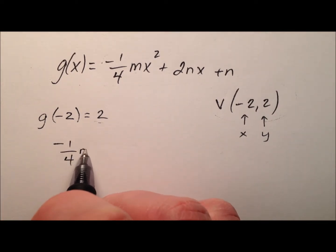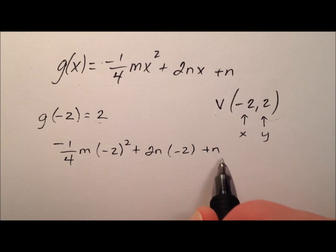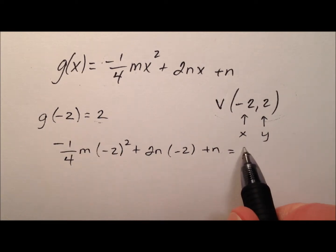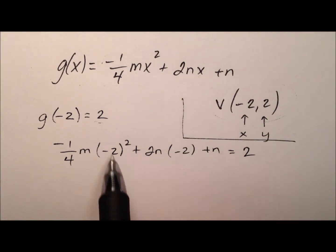So, negative 1 fourth m times negative 2 squared plus 2n times negative 2 and then plus that n, and that equals my 2 right there. Okay, let's just kind of simplify this a little.